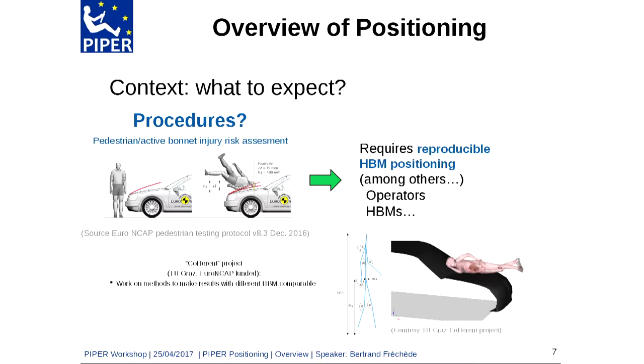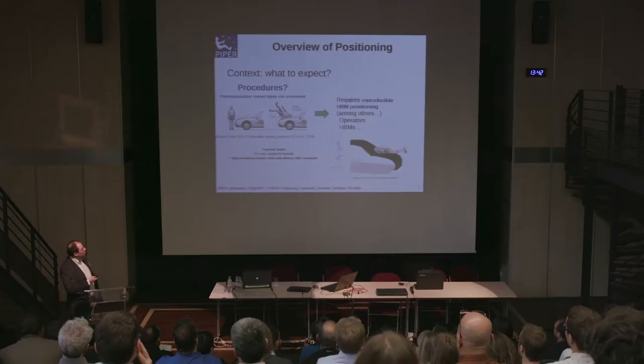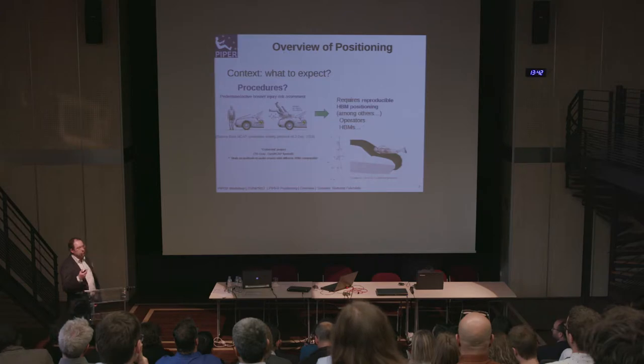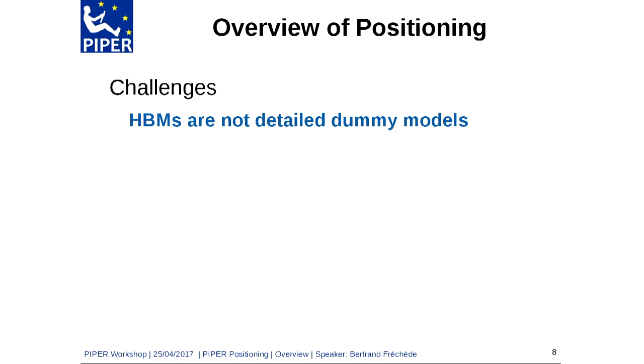An interesting example on that topic is the Coherent project, led by TU Graz and funded by Euroncap. They work on methods to make results with different HBMs comparable, and further, to deliver procedures to certify different HBMs for the same impact configuration. That requires well-defined positioning, and there is work going on — we expect more to follow — so we need tools for this.